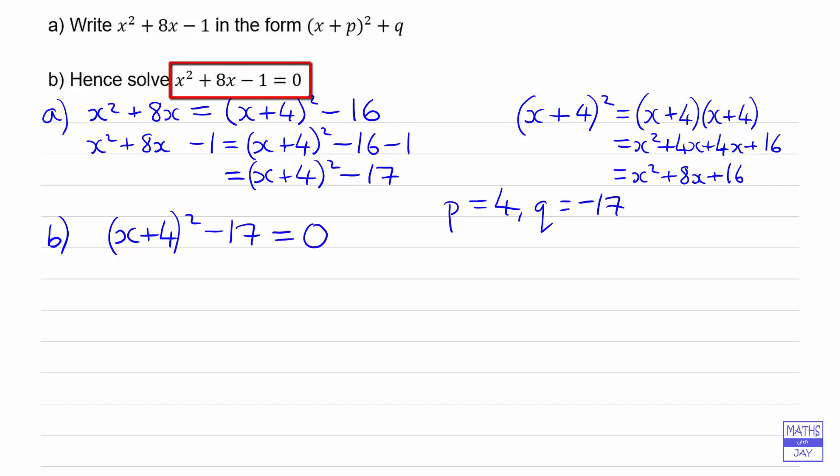And the reason why this is so easy to solve is that the x is now only in one place. So we need to unravel this to get to the x. So we're aiming to get the x on its own on the left-hand side. So all we need to do is the same to both sides at each stage. So to start with, we'll add 17 to both sides. So we get x plus 4 squared is 17.